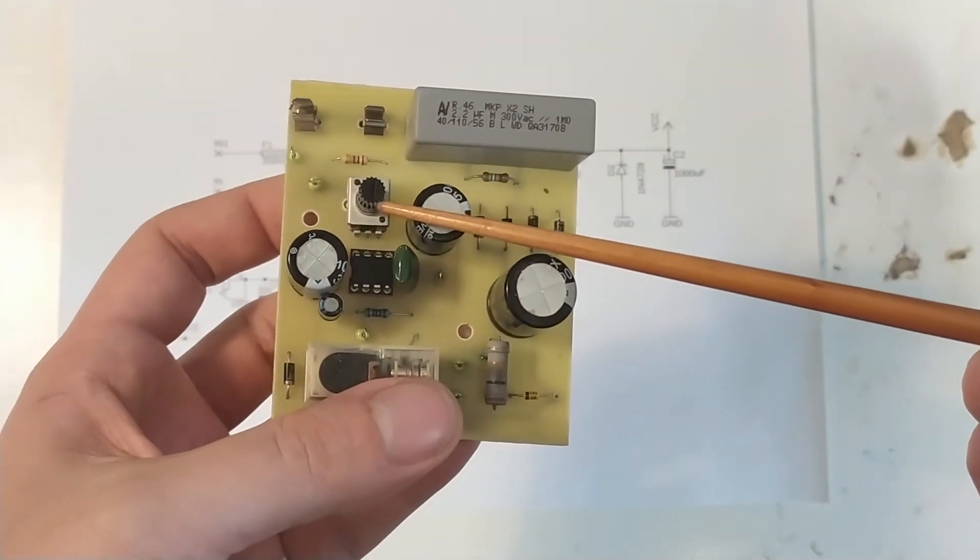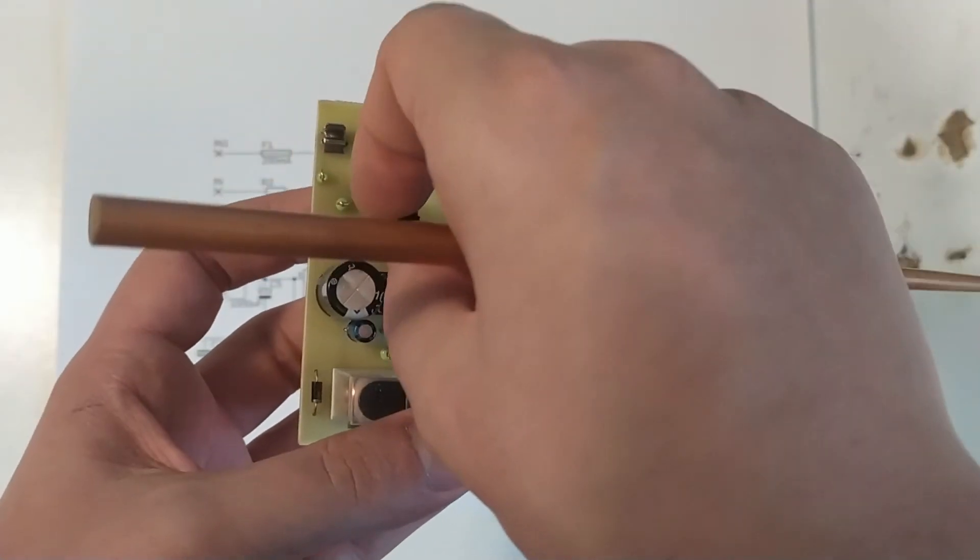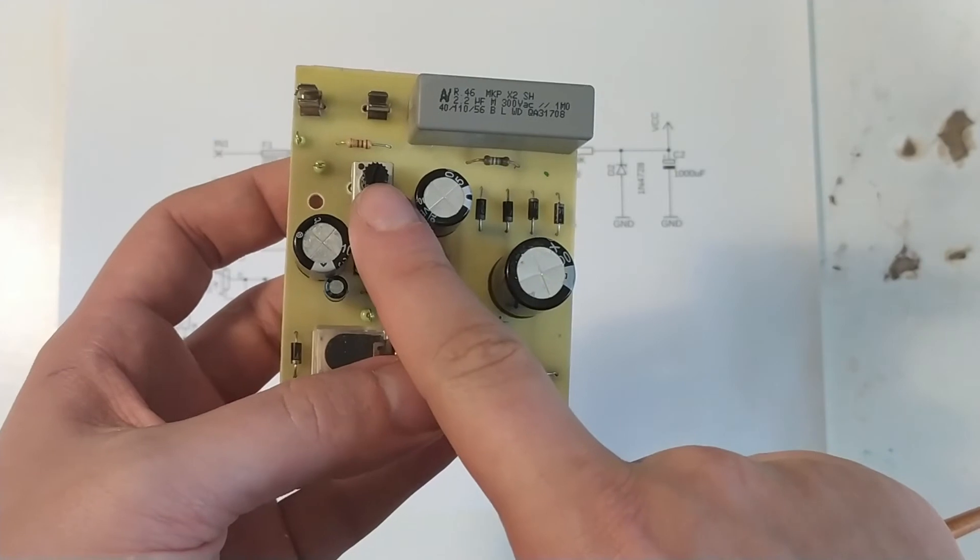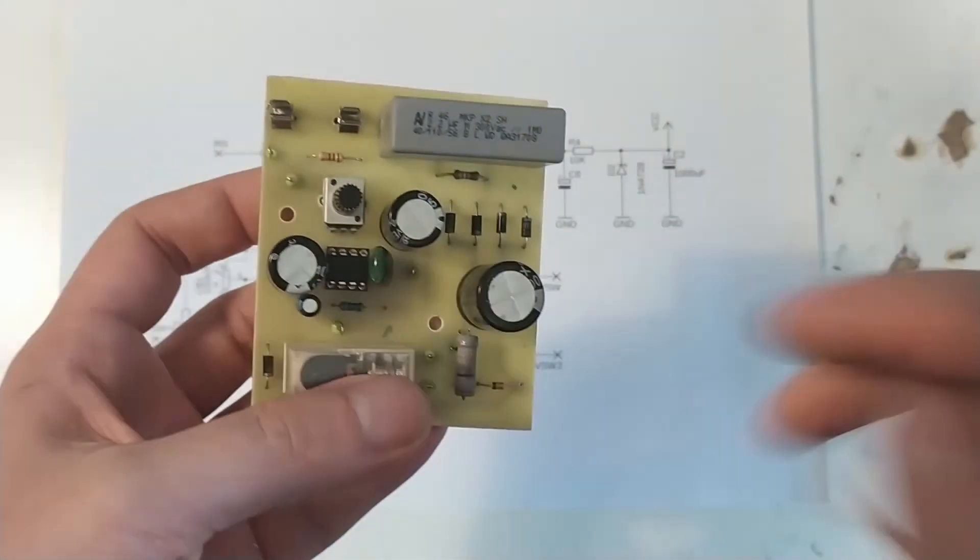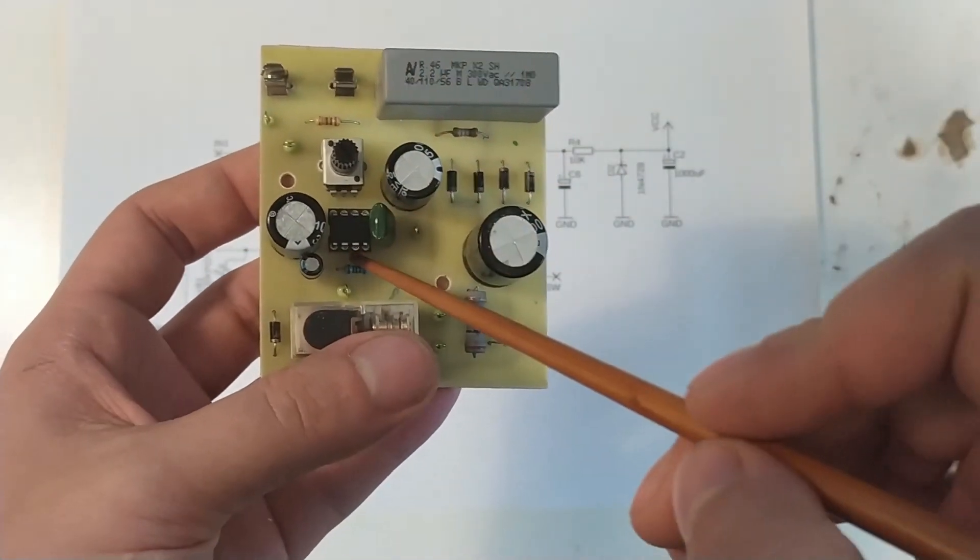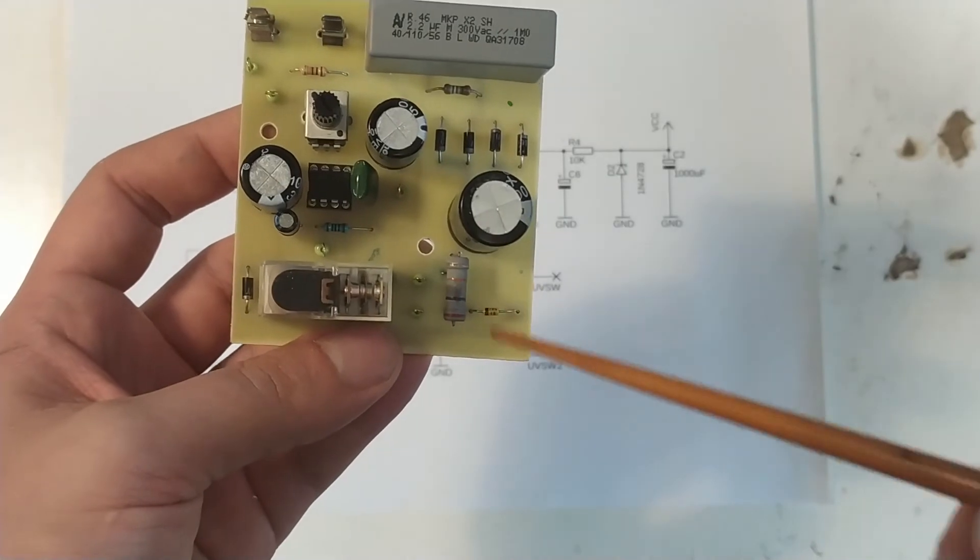It still has one of the mounting screws here. So this is the potentiometer where you would adjust the time for it to run. Here's the fuse holder. There's the 555, the relay and the dropper resistor here.